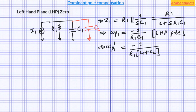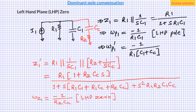In order to create a left-hand plane zero, a resistor is connected in series with capacitor CC. Keep in mind this resistor can also be placed on top of CC — since these two components are in series, it doesn't really matter. After connecting this resistor, this system becomes a second-order system because C1 and CC are no longer in parallel. As we can see from this equation, we now have a left-hand plane zero in the system. But at the same time, we have a second-order denominator, which means there is an additional pole in the system.